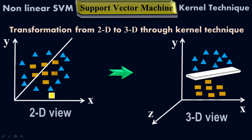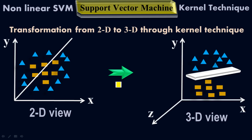This is the 3D view, and this is the 2D view where we have the data in a non-linear form. Here, in 3D, we have the data in a linear form — they have been separated from each other. This plane is a decision boundary which separates the two classes of the data. That's how non-linear SVM works: it uses the kernel trick to go from low dimension into higher dimension when we have data in a non-linear form, and by changing the dimension we can separate the data sets from each other.